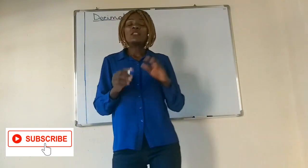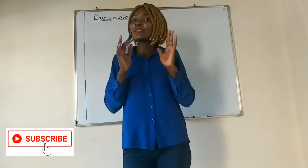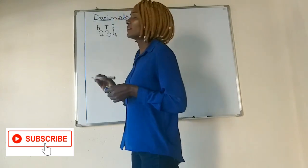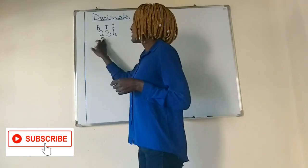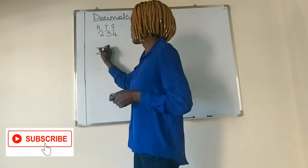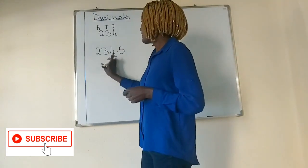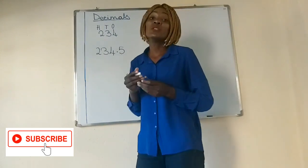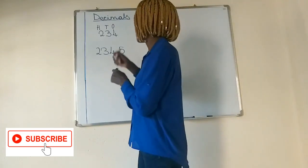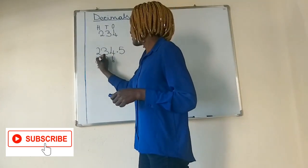What do I mean by that? Usually with numbers, we write place values. For example, you have ones, these are the tens, those are the hundreds. So this is a whole number.